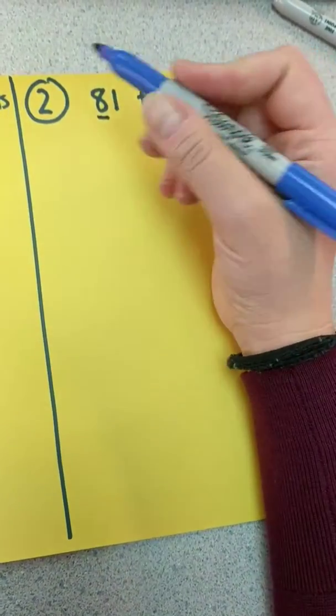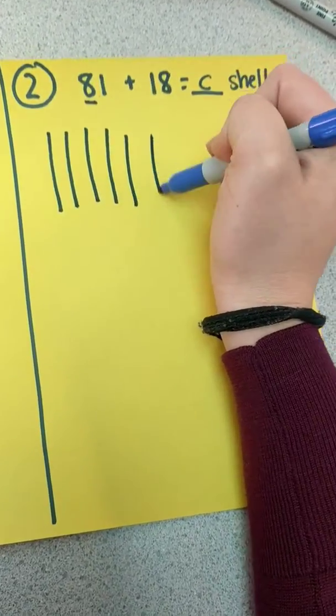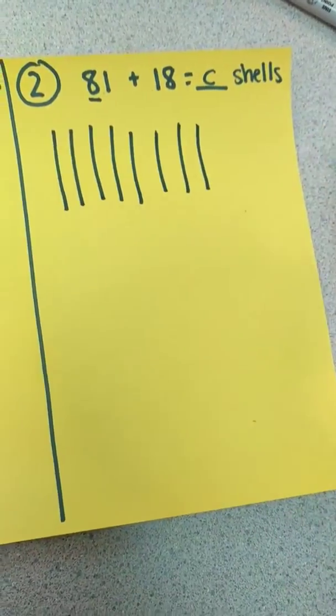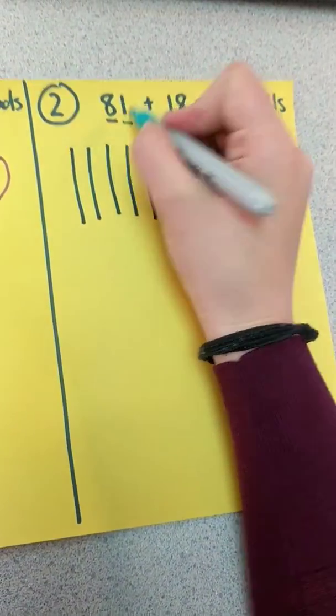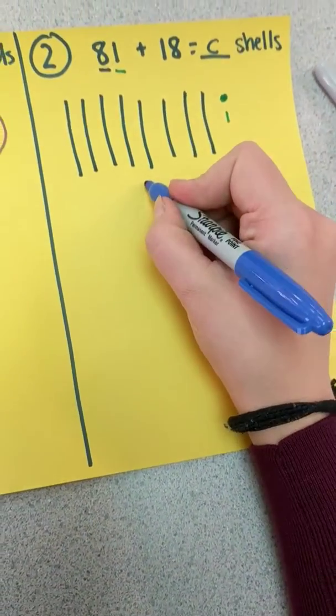So with 81 I'll say how many tens, they say eight, so I'll draw 10, 20, 30, 40, 50, 60, 70, 80. And I'll say how many ones and they'll say one. So I'll write my one, label it, label my tens.